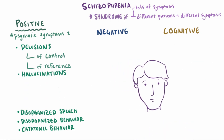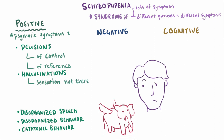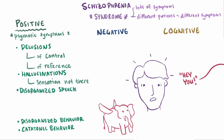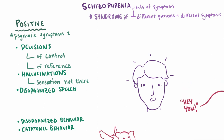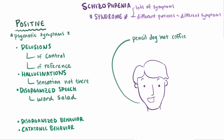Hallucinations are a second type of positive symptom, and can be any kind of sensation that's not actually there, including visual but also auditory sensations, like hearing voices or commands. A third type is disorganized speech, an example being something like a word salad, which seems like just a random jumbling of words or phrases, like pencil, dog, hat, coffee, blue.